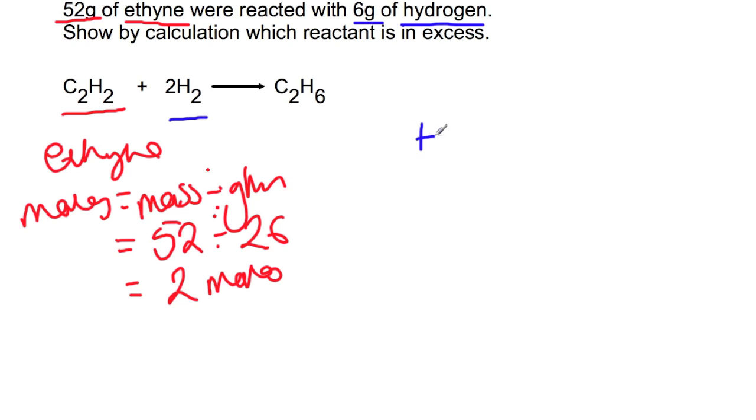Do the same for hydrogen. So moles equals mass divided by gram formula mass. We have 6 grams. Gram formula mass of 2. So we have 3 moles of hydrogen present.